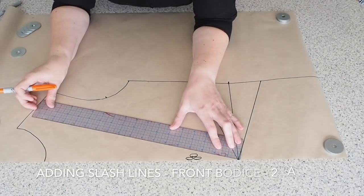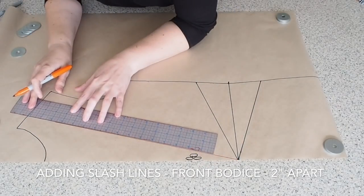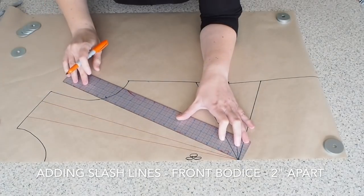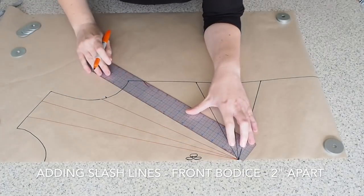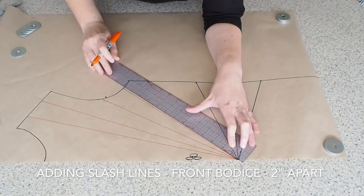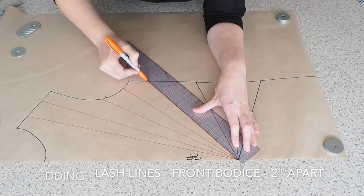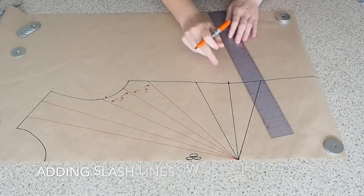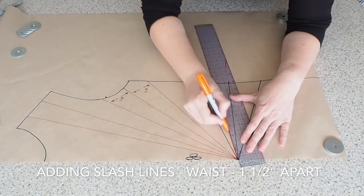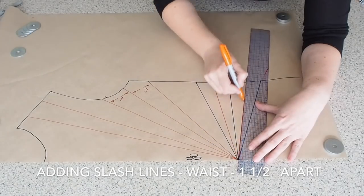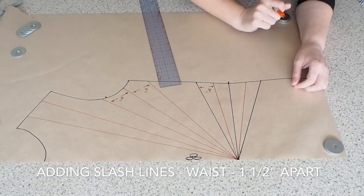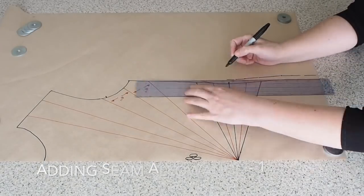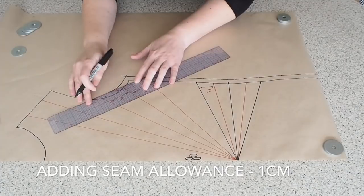And then to create the twist, I need to give myself a little bit more fabric at that dot you see me mark. So to do that, I'm using the slash and spread method and drawing myself five lines on the bodice. These lines are two inches apart and they all emanate from that dot. And then for the waist piece, I'm going to draw three lines and these are one and a half inches apart, again emanating from that dot. I'm going to give myself a one centimeter seam allowance the whole way around before separating these pattern pieces.